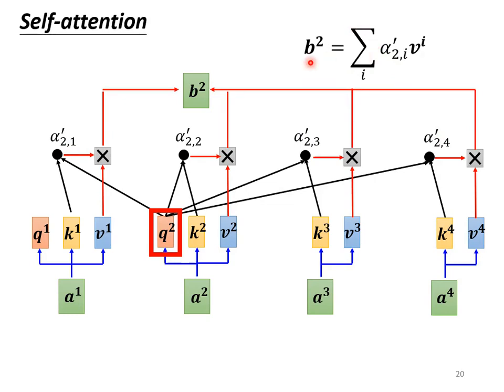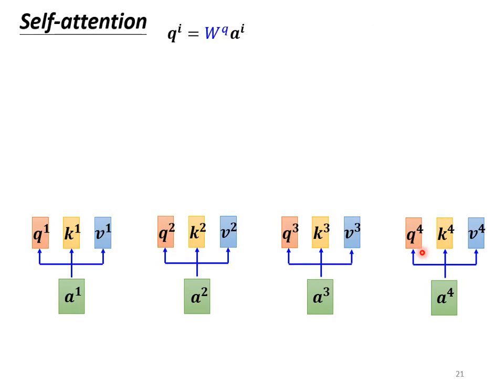The process I just described is the operation of self-attention. Next, let's look at the operation from the perspective of matrix multiplication. How does self-attention work? We know that from a1 to a4, each vector must generate q, k, and v respectively.